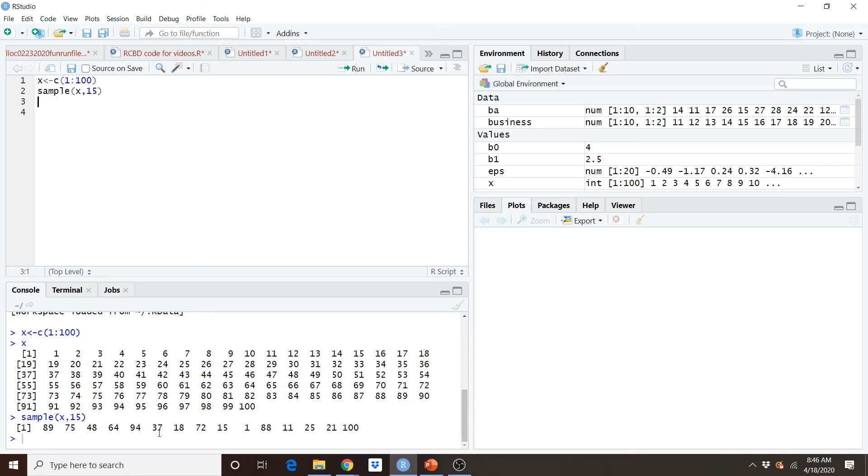15 numbers. And these correspond to the individuals out of this 100 who would be selected. So individual 89, 75, 48, 64, 94, 37, 18, 72, 15, 1, 88, 11, 25, 21, and 100.